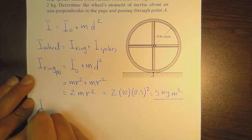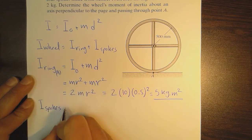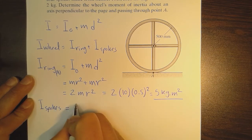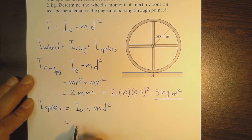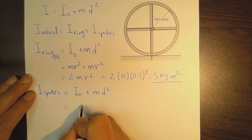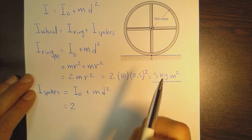For the spokes, I_spokes - we have two so everything will be multiplied by two. We're going to use the same relation again and substitute the numbers.